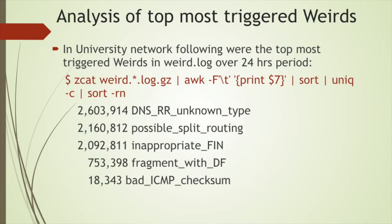Deep diving into what the weird log looks like at university: over a 24-hour period, the five most-triggered weirds were: DNS_RR_unknown_type at the top, followed by possible_split_routing, inappropriate_fin, fragment_with_do_not_fragment, and bad_ICMP_checksum. The first column is the count and the second column is the weird type - the seventh column in your weird.log file. We'll go through each one to see what was causing them and what remediation we applied.